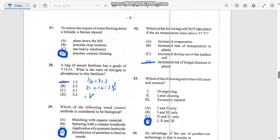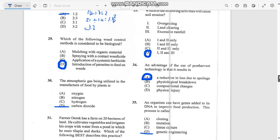Number 29: Which of the following weed control methods is considered to be biological? Biological means you're using another pest to control, so it's the introduction of parasites to feed on weeds.